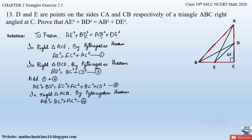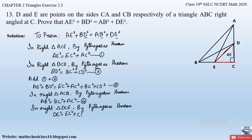Coming back to what we have to prove, we also need DE². The right-angle triangle formed with side DE is triangle DCE. In right triangle DCE, by Pythagoras theorem, since DE is the side opposite the right angle, DE is the hypotenuse. So DE² = EC² + DC². Let this be equation 4.